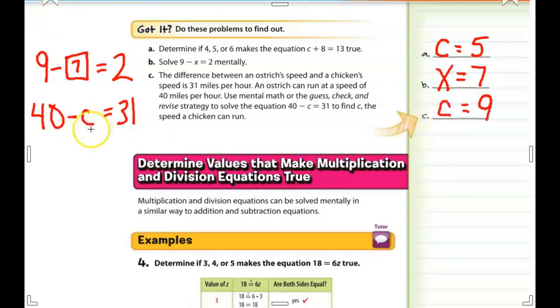So if we just go ahead and guess, let's say the chicken's 10 miles an hour. 40 minus 10 is 30. So that's too much. So we're just going to take away 1 mile an hour from the chicken, and we guess 9. 40 minus 9 is 31, and that is the correct answer. So chickens can run 9 miles an hour.